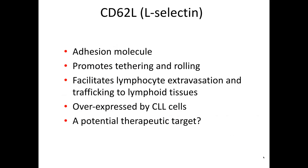Let's get back to CD62L, or L-selectin. It's an adhesion molecule that promotes the tethering and rolling of lymphocytes — not just CLL cells, but normal B and T lymphocytes too — in the context of extravasation. It facilitates lymphocytes to traffic out of the vasculature and into the tissues. Importantly, we've shown it's overexpressed on CLL cells compared to normal B cells. So we want to ask whether we can use this molecule as a therapeutic target.